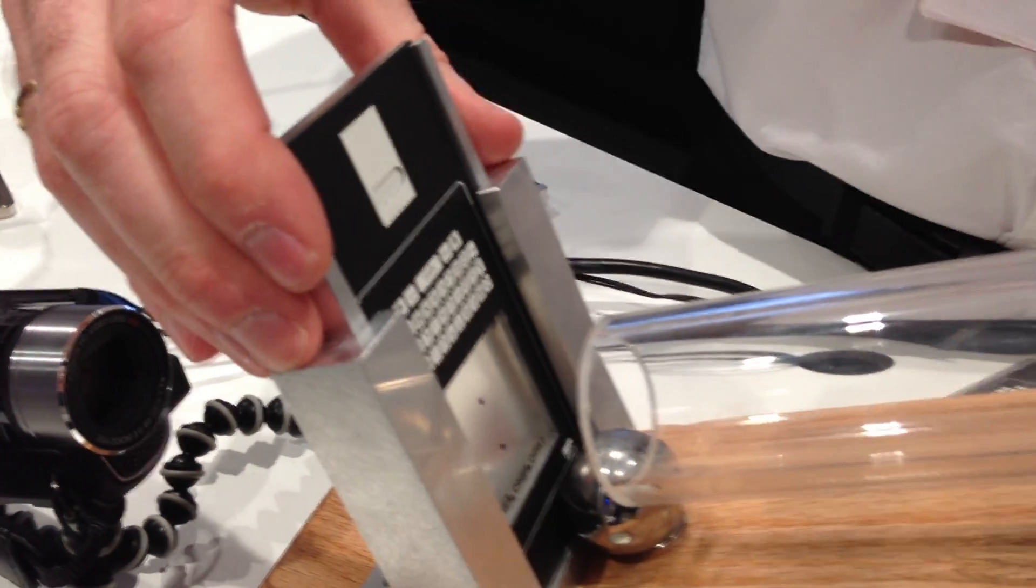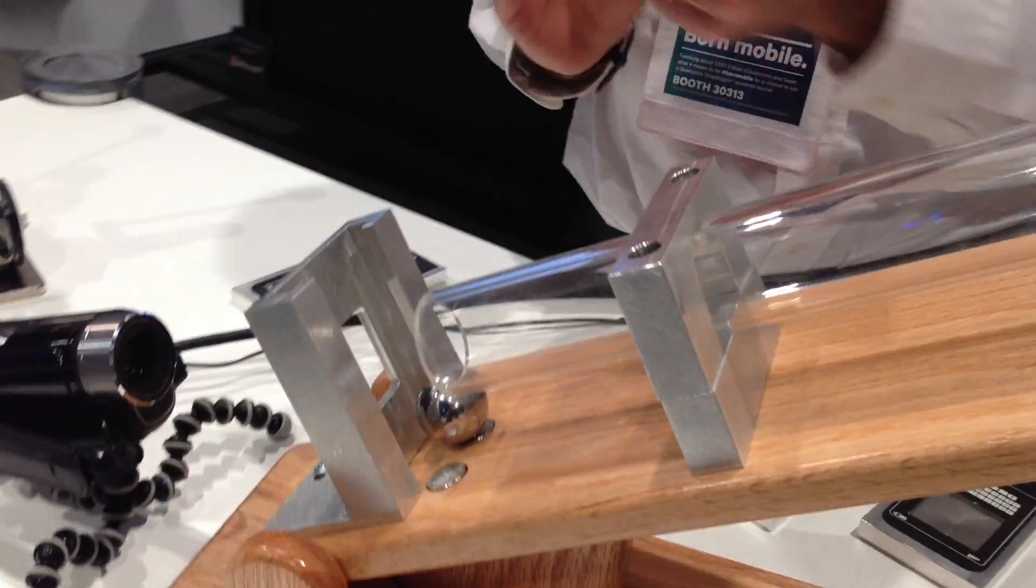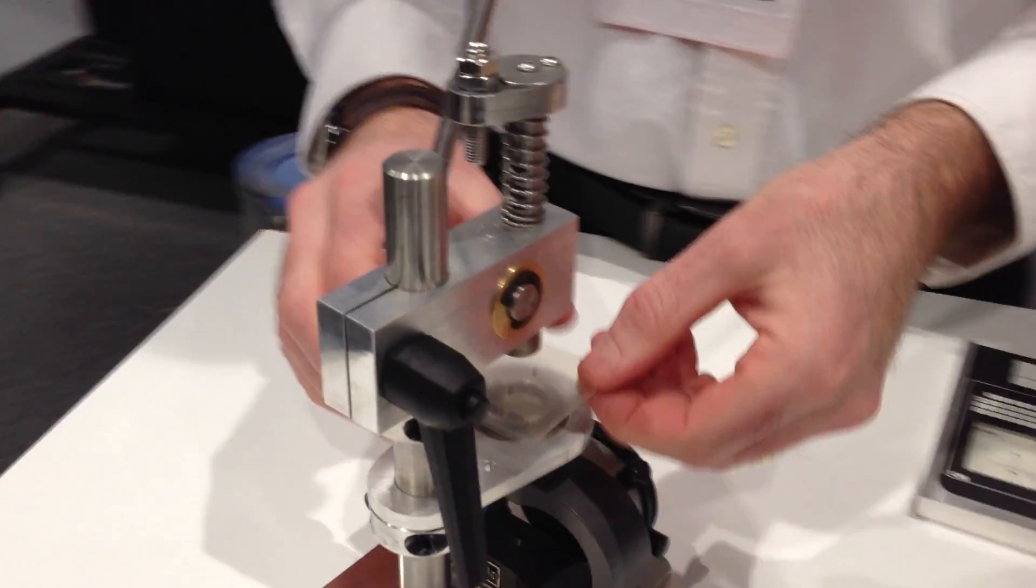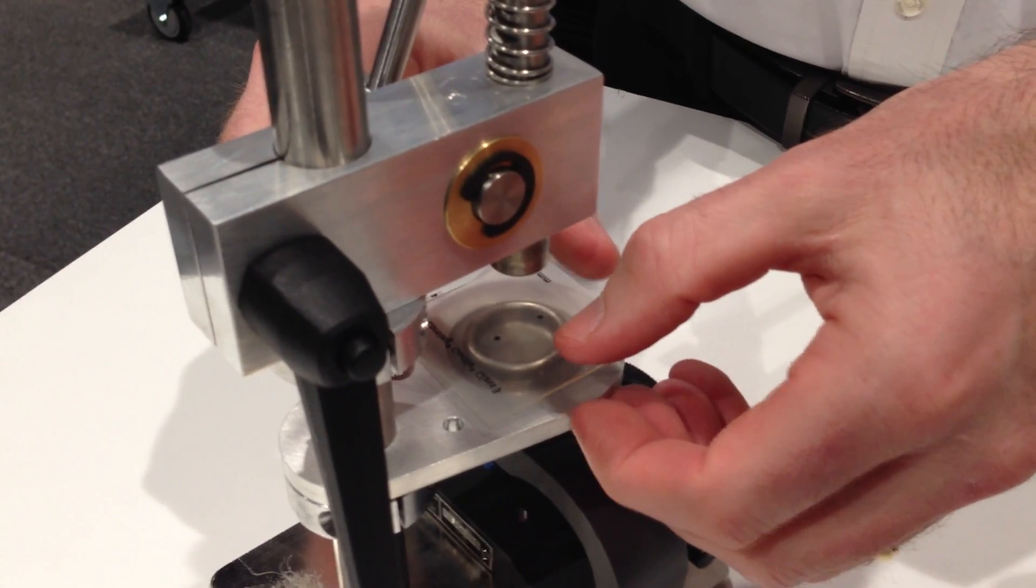I'm going to do one more thing before we finish. We're going to take this sample out. Just to show you the added retained strength with this sample, we're going to put it inside of this standard ring-on-ring test fixture.